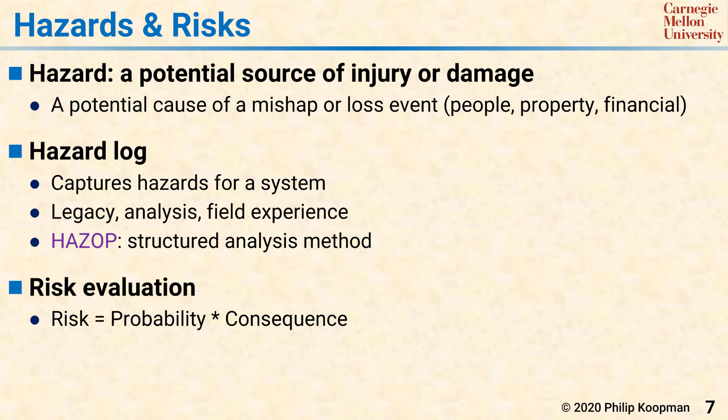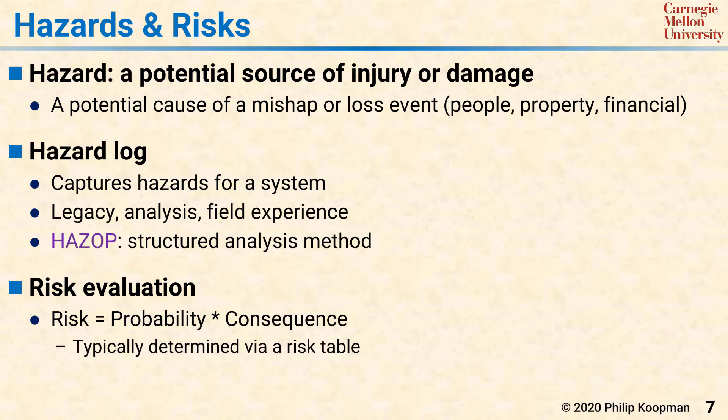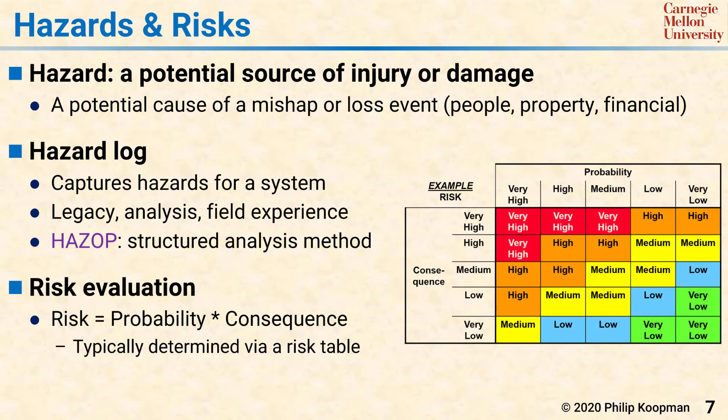In practice, this mathematical approach has problems because it is difficult to create precise numbers for both the probability and the consequence. It also has trouble with very low probability events that have extremely high negative consequences. Thus, it is common to see a risk table approach, as shown by this figure.